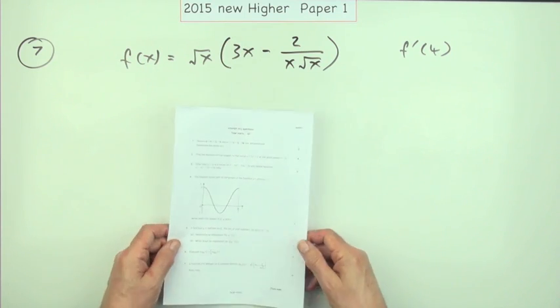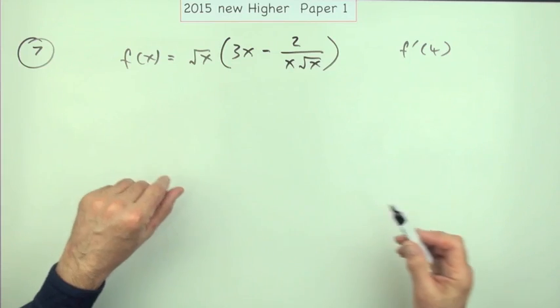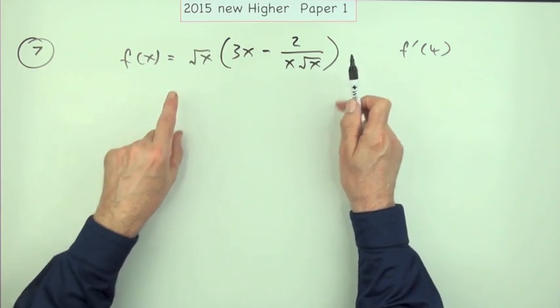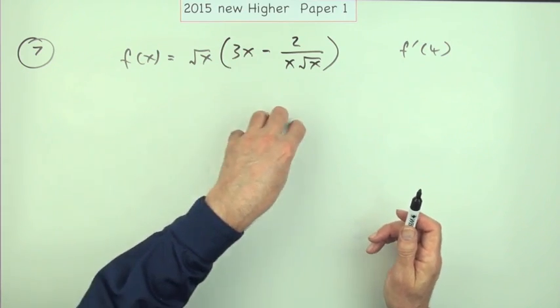You can't just differentiate that the way it is. It needs to be in differentiable form, which is separate terms with variables on top in index form.